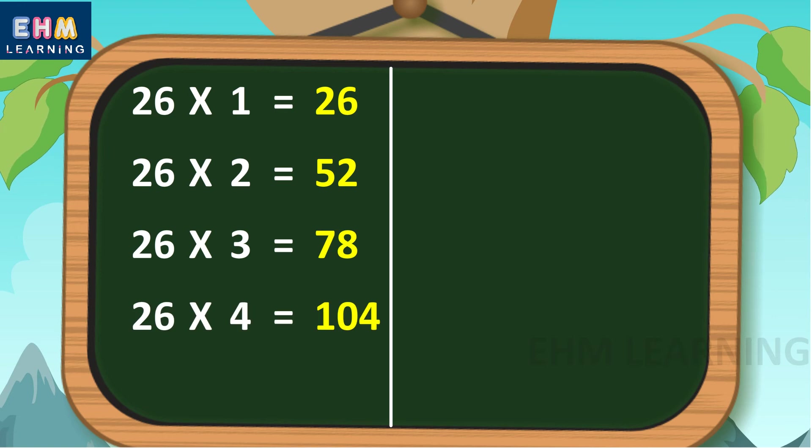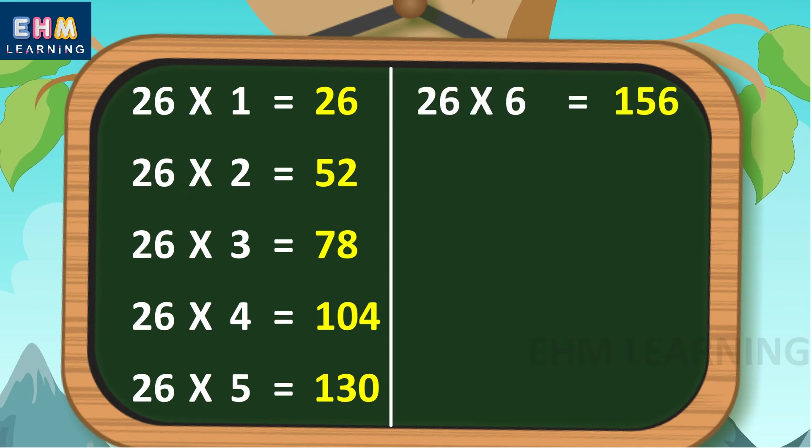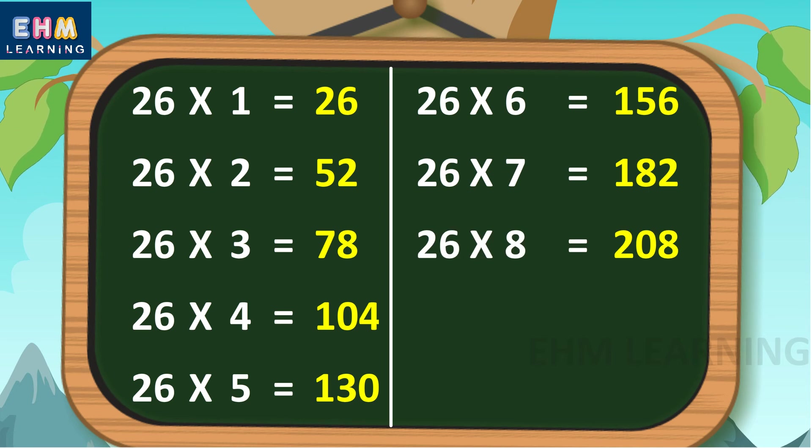26 fours are 104, 26 fives are 130, 26 sixes are 156, 26 sevens are 182, 26 eights are 208.